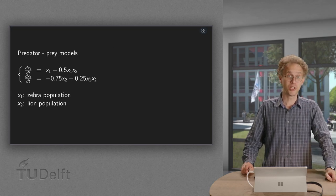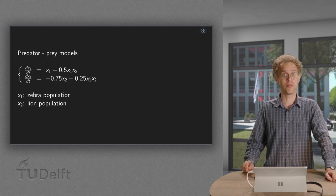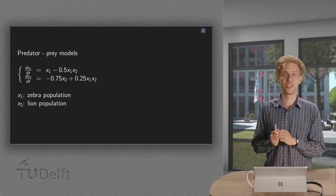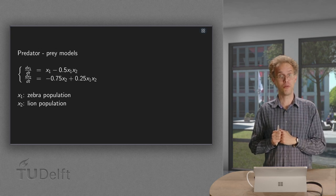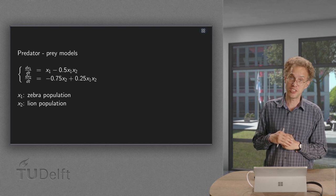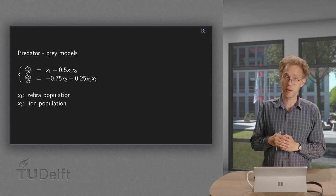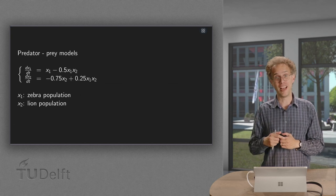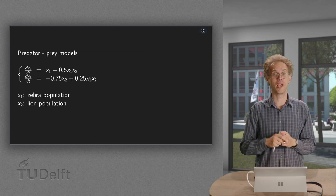When introducing nonlinear systems, we had the example of a predator-prey model for zebras and lions. Without lions, the zebra population grows, but with a lot of lions, the zebra population decreases. However, due to the decreasing zebra population, also the lion population decreases and the zebra population can grow again.